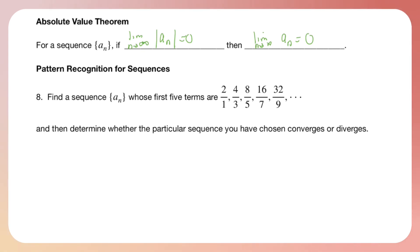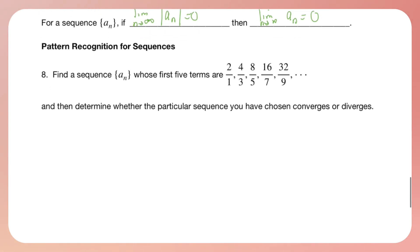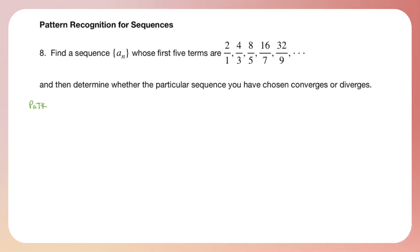Now there are some patterns that we need to start recognizing for sequences. So we're going to use examples for this. We're going to find a sequence a sub n which has these first five terms, and we're going to determine whether the particular sequence converges or diverges. So we're going to start working for patterns.